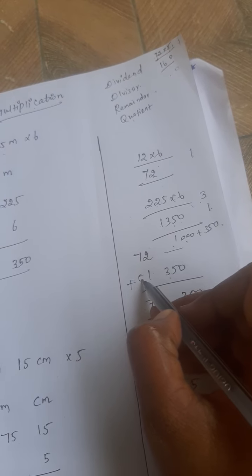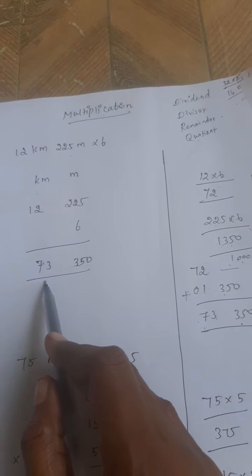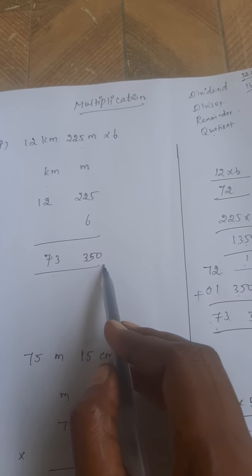I write 0 like that. So now we get the answer 73 kilometer 350.